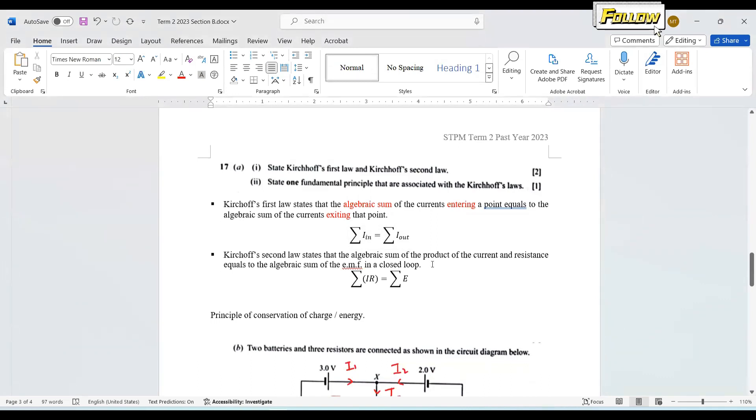Second law states that the algebraic sum of the product of the current and resistance equals to the algebraic sum of the EMF in a closed loop. So two marks, I think you can get it.